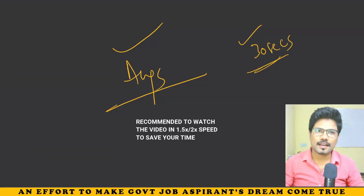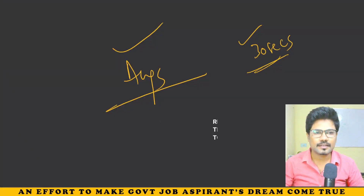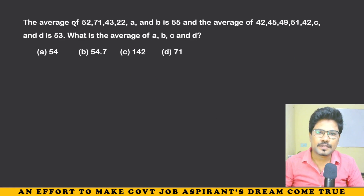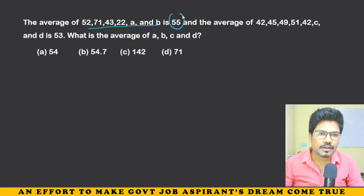Guys, in the last lesson we discussed till here, right? So let us move forward. The average of 52, 71, 43, and 22, A and B is 55.